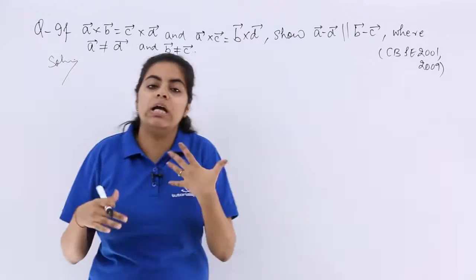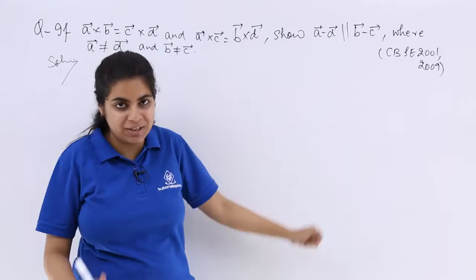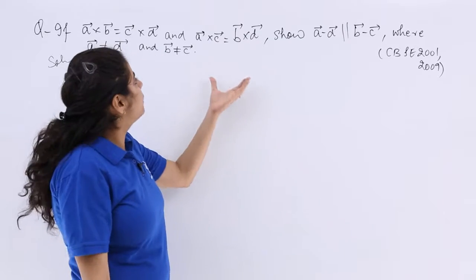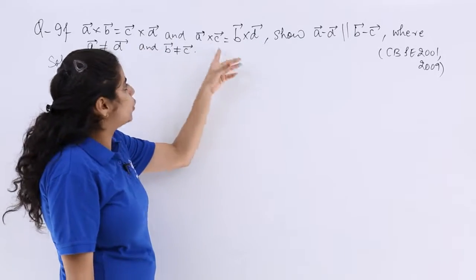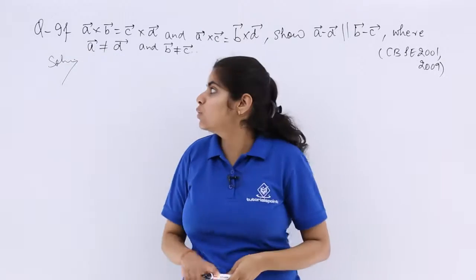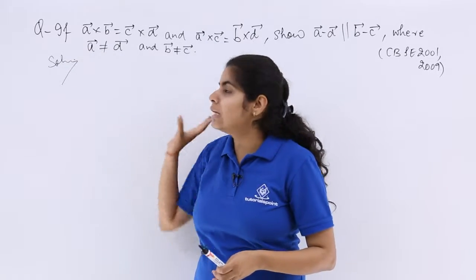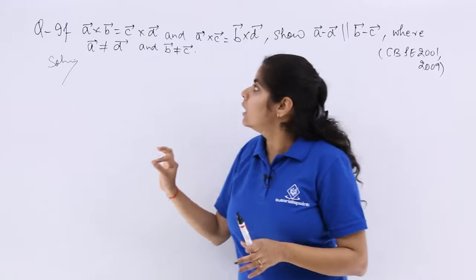Please do not get confused with the highly complicated wording of this question. Simply speaking, we have been given two cross products, and we are supposed to know what is the integrity of this question. Let's see.